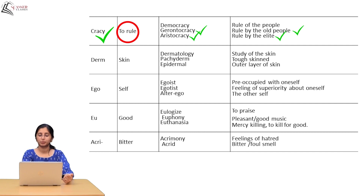Ego means self. From ego we get: Egoist — preoccupied with oneself. Egotist — feeling of superiority about oneself. Alter ego — the other self. The root 'eu' means good. Eulogize means to praise. Euphony means pleasant or good music. Euthanasia means mercy killing, or to kill for good.